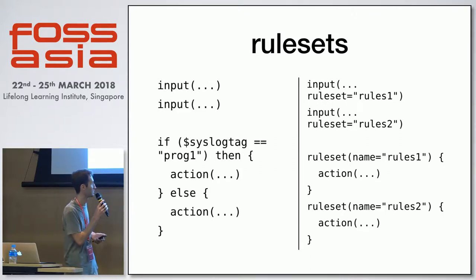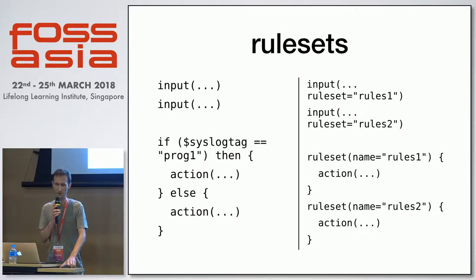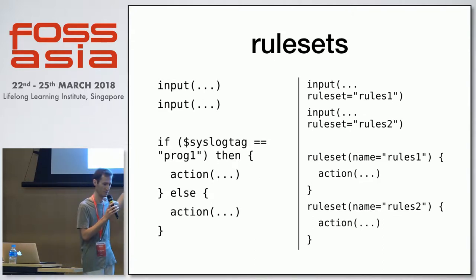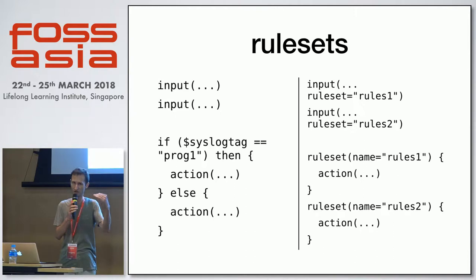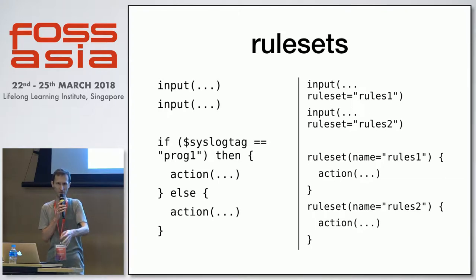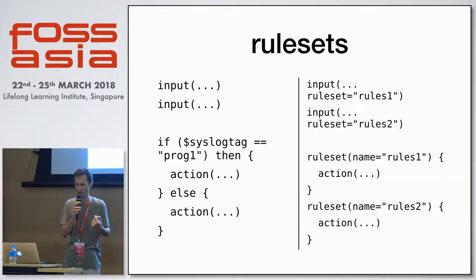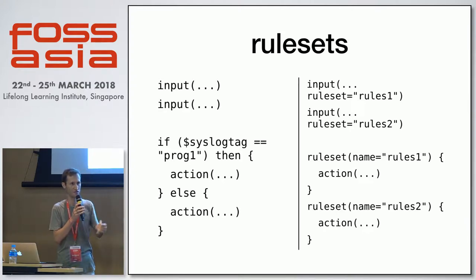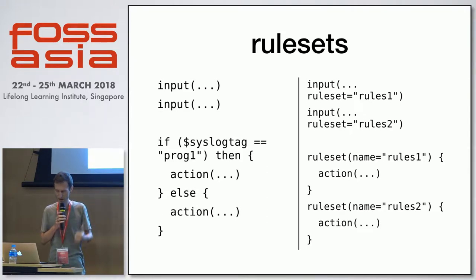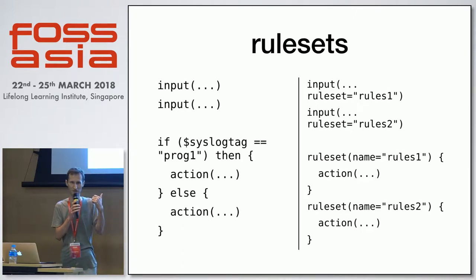In the default case with just one rule set, it's one pipeline stream. You have to check on every message what it's about — is it from this program, this input, or that file — and then make a decision. When you have multiple rule sets, you can bind an input straight to a rule set so you don't need to check. It saves time and reduces complex logic.